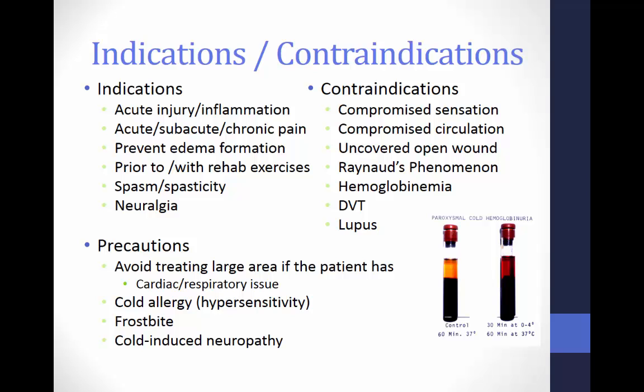A precaution is a measure taken in advance to prevent something dangerous or damaging. We need to be aware that there might be a reaction depending on the individual; if an individual exhibits certain signs or symptoms, there may be a higher risk. Precautions for cryotherapy include: avoiding large treatment areas if the patient has cardiac or respiratory issues, cold allergies or hypersensitivity to cold, and previous experience with frostbite or cold-induced neuropathy. A contraindication is a sign, symptom, or diagnosis which indicates certain interventions may not be used. Contraindications for cryotherapy include compromised sensation, compromised circulation, uncovered open wounds, Raynaud's phenomenon, hemoglobin anemia, deep vein thrombophlebitis or DVT, and lupus.